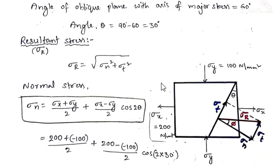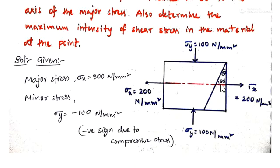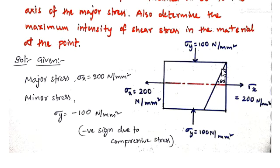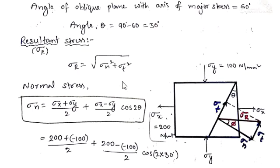The angle of the oblique plane with the axis of the major stress is given as 60 degrees. However, we require theta — the angle with the major stress plane. From the construction, this forms a triangle: one angle is 60 degrees, one is 90 degrees, so the remaining angle theta is 30 degrees. Therefore, the value of theta is 30 degrees.